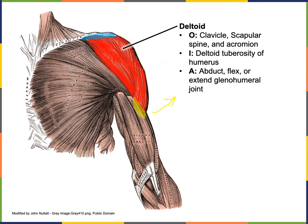If just the clavicular, most anterior portion contracts, the action would be flexion. And if just the most posterior, spinous portion of the deltoid contracts, the action would be extension of the glenohumeral joint. So the deltoid has a diversity of actions depending on which portions contract — it can perform abduction, flexion, or extension of the glenohumeral joint.